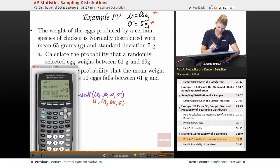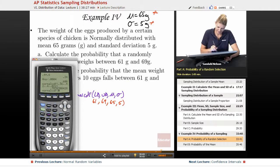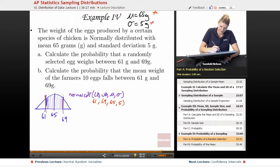So we say second vars, normal CDF, 61, 69, 65, 5, and we get that the area is 0.576. So this 0.576,